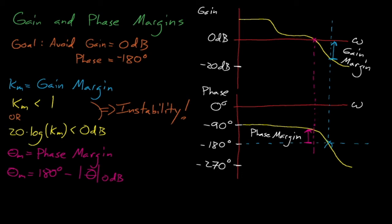However, in general, a negative phase margin means that our system will become unstable because it implies that our system will also have a gain margin that's less than 1.